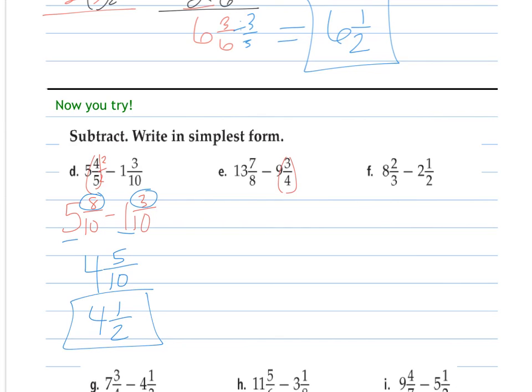This one I need to change to have a common denominator. So I'm really doing 13 and 7 eighths, minus 9 and 6 eighths. Notice how I'm changing the way I write it, because some of you are going to do that differently. 7 minus 6, my numerators, is 1 out of the 8. 9 taken away from 13 is 4. And that is already simplified.